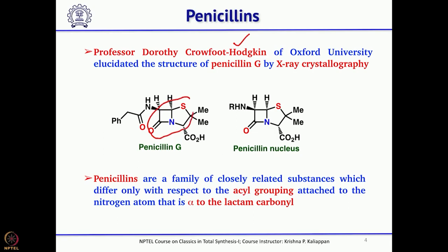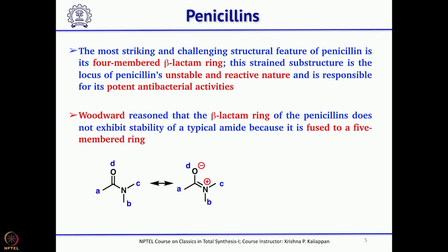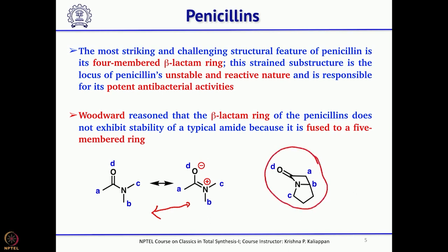This bicyclic beta-lactam/5-membered ring is the core structure for all penicillins. There is also an amino group adjacent to the carbonyl group, which is acylated with various acyl groups. The 4-membered lactam is quite unstable compared to normal amides or 5- and 6-membered lactams — but because it is unstable, it also reacts faster. As Woodward pointed out, unlike a normal amide, the 4-membered beta-lactam cannot adopt the resonance form that stabilizes typical amides, and that is where the reactivity of the beta-lactam comes into play.